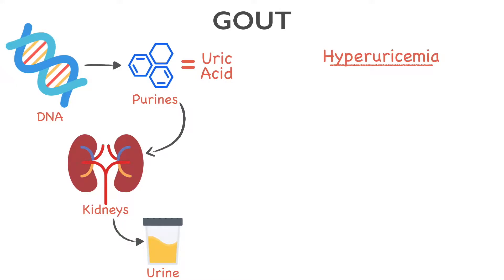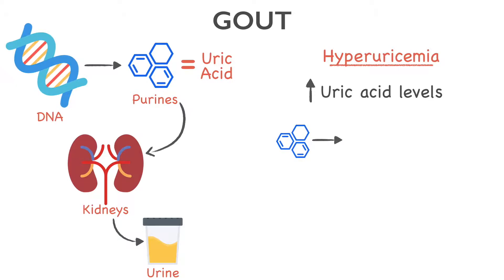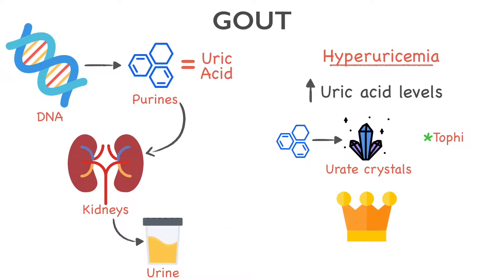But sometimes your body either produces too much uric acid or your kidneys excrete too little. This occurs due to a combination of diet and genetic factors. At high levels, uric acid crystallizes. When this happens, uric acid can build up forming sharp, needle-like uric crystals in a joint or surrounding tissue that can cause pain, inflammation, and swelling. Back in the Middle Ages, it used to be known as the disease of kings, since it was mainly seen in wealthy men who drank and ate too much, especially beer.